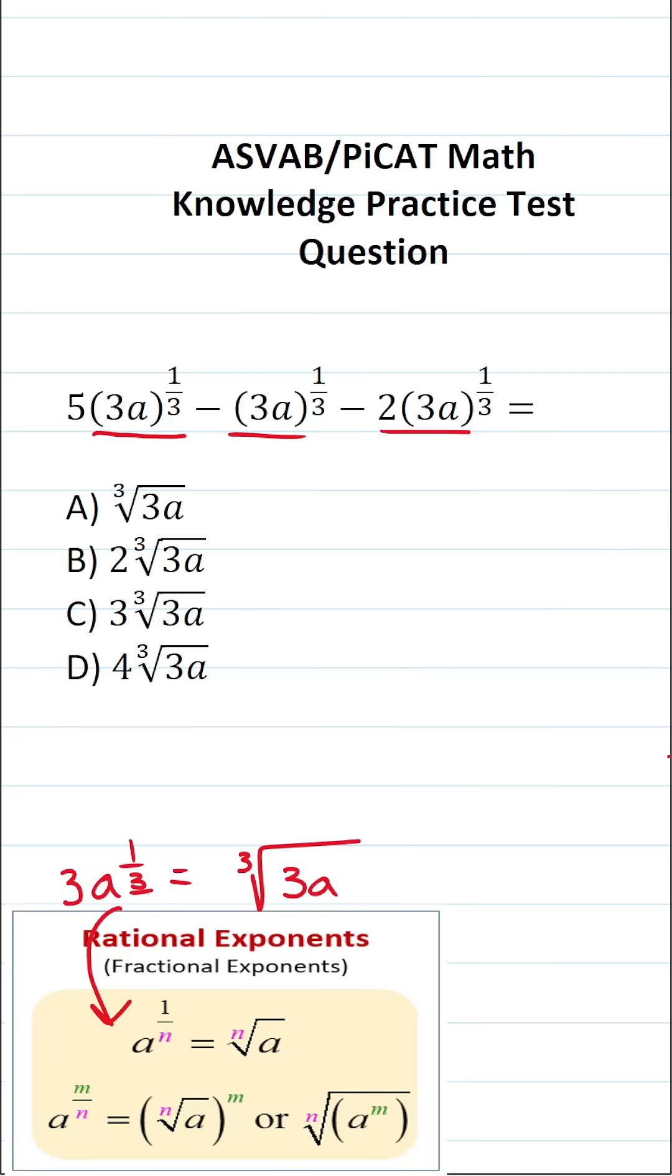So with that in mind, let's go ahead and rewrite each of these accordingly. This becomes 5 times the cube root of 3a minus the cube root of 3a minus 2 times the cube root of 3a.